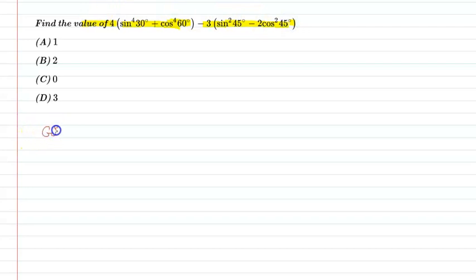So the given expression is 4 times sin to the power of 4, 30 degree, plus cos to the power of 4, 60 degree, minus 3 sin square 45 degree, minus 2 cos square 45 degree. Now let's look at the solution.